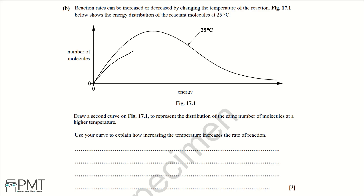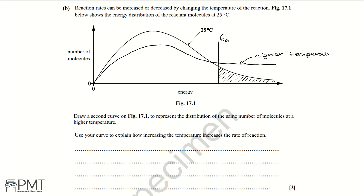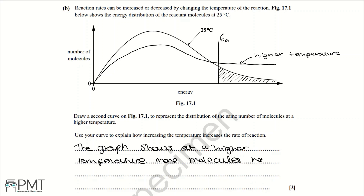The new curve for a higher temperature has a lower peak and tails off more gradually. Mark the activation energy on the graph and shade the area representing molecules with energy above the activation energy — at the higher temperature, a greater proportion of molecules have energy above the activation energy. To get the two marks, you need the correct graph with a lower peak and the activation energy marked, then write: at a higher temperature, more molecules have an energy above the activation energy.